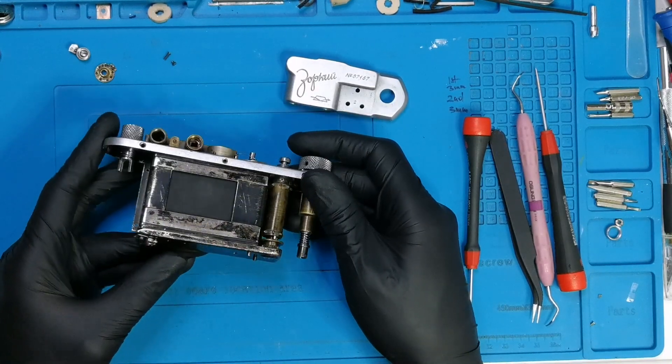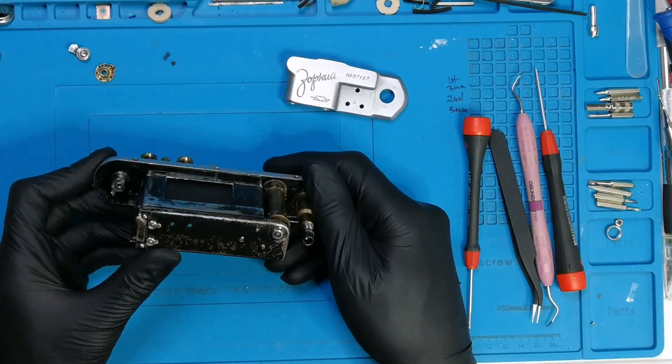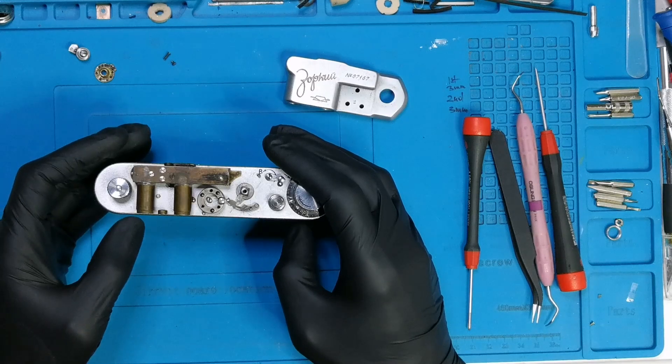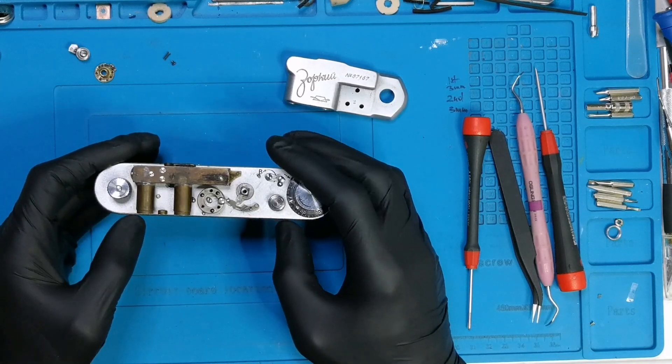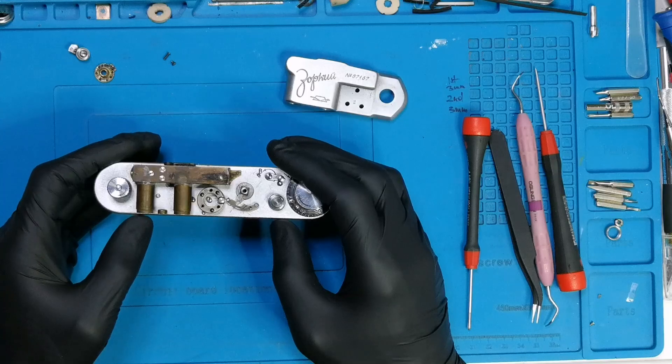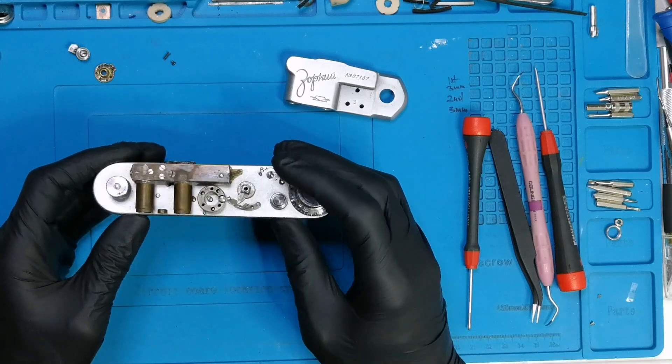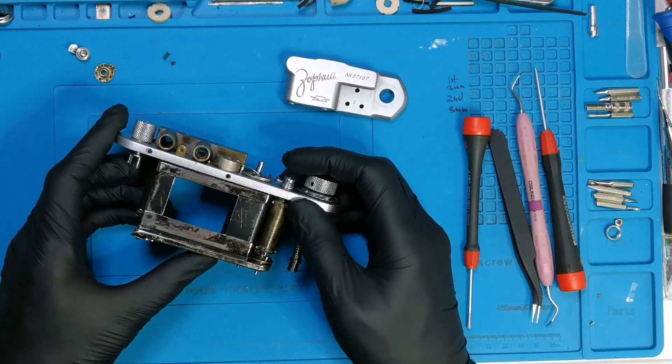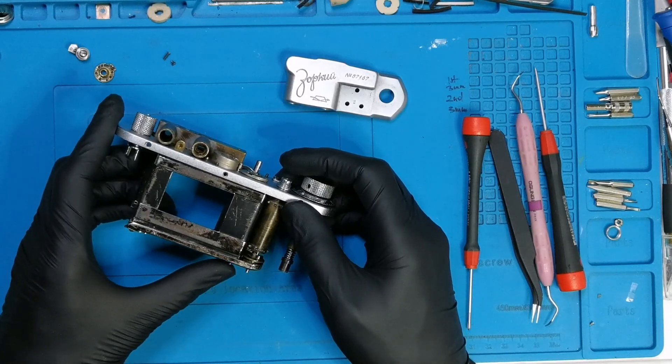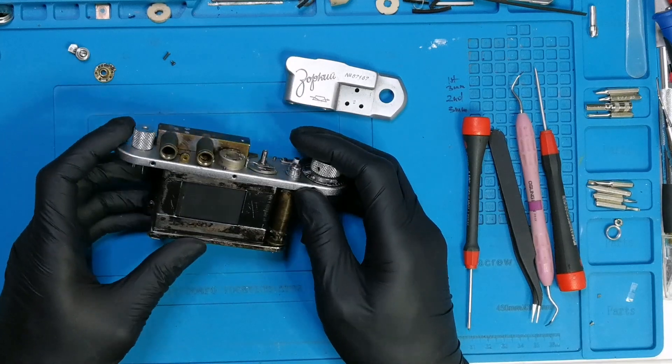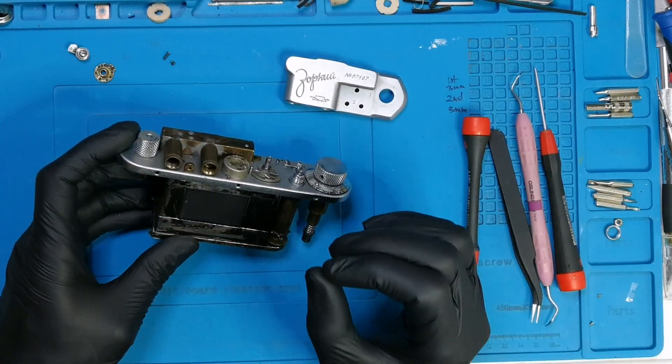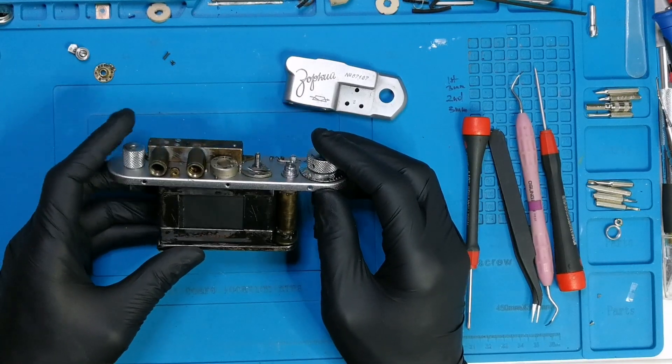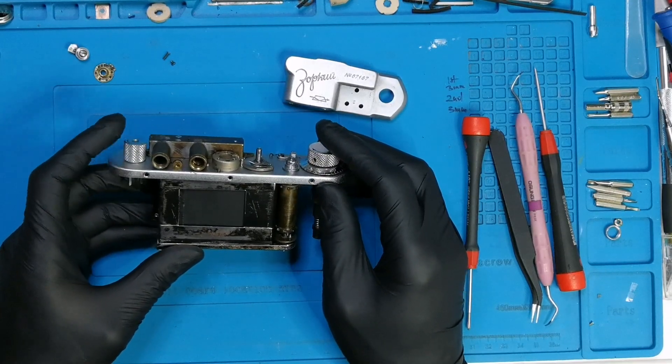The tension on the shutter, on the curtains, is pretty much what I mentioned last time. Just a bit under two full turns for the second curtain and three full turns for the first curtain. The first one is too snappy, while the second one is maybe a bit lazy, so I have to adjust the curtains even more.